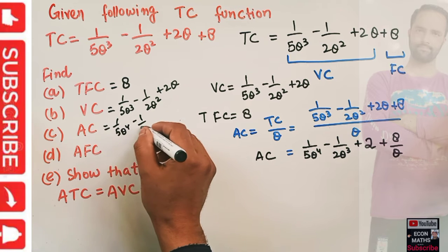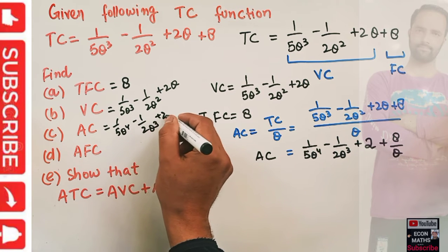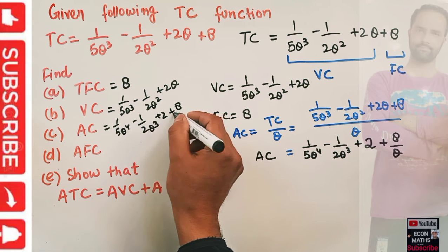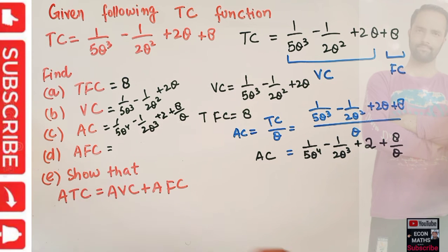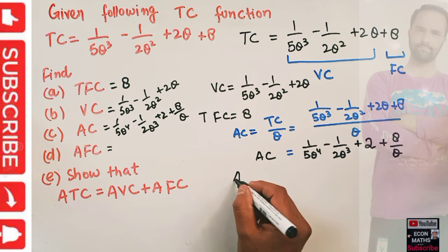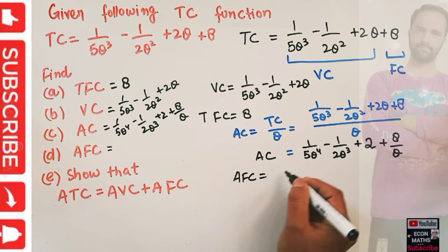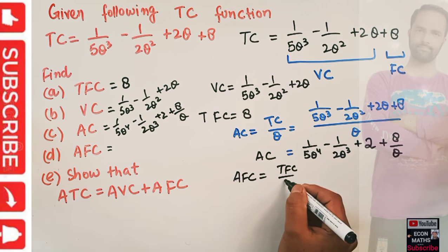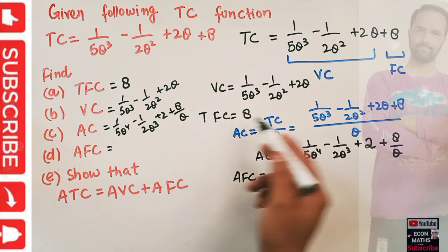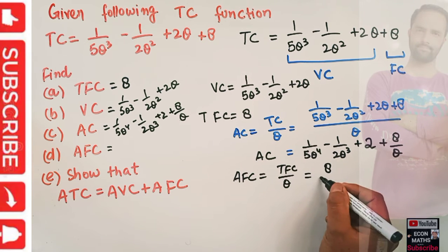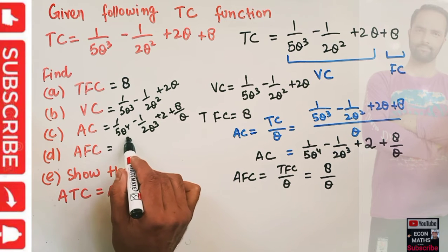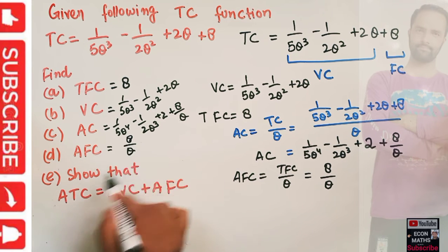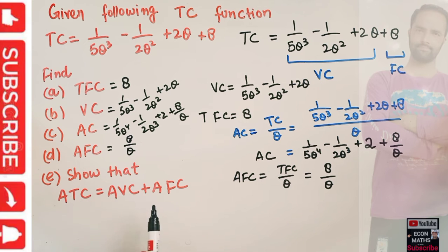This is our average cost: 1/5 q² − 1/2 q + 2 + 8/q. Now, part D is average fixed cost. Average fixed cost is equal to our total fixed cost divided by output. Total fixed cost is 8, so dividing by output q, our average fixed cost = 8/q.